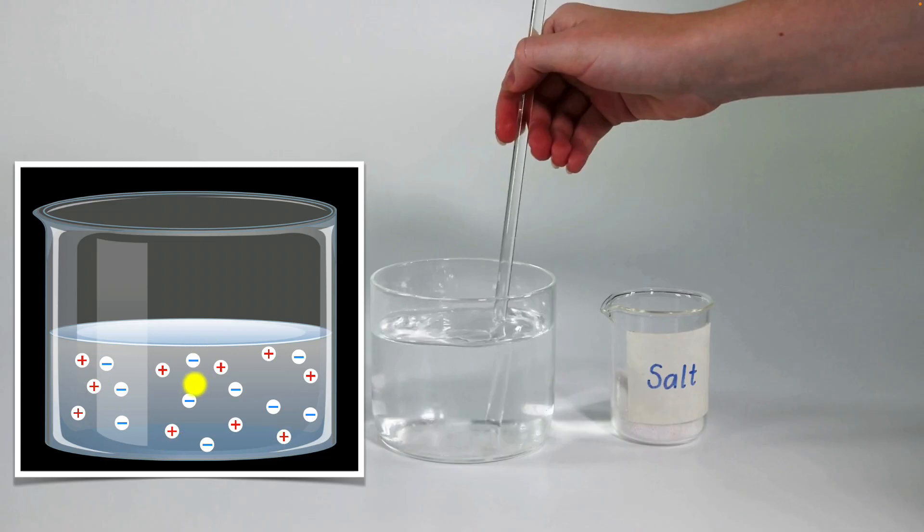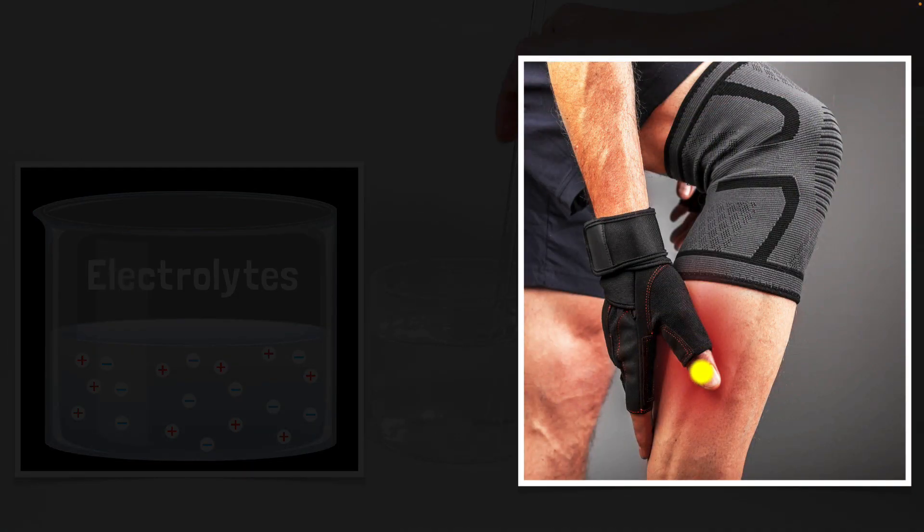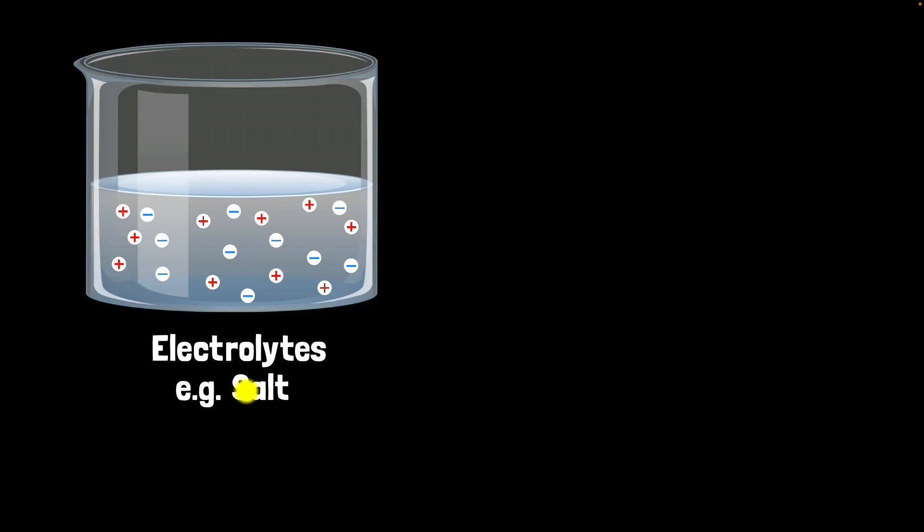Such solutions, which contain charged particles, we give a name to them, we call them electrolytes. And you probably have heard of this term before. Yes, these are the same electrolytes that we drink because our body also runs on electricity. And when we are running low on electrolytes, it causes cramps and stuff. So, salt solution is an example of electrolyte solution.